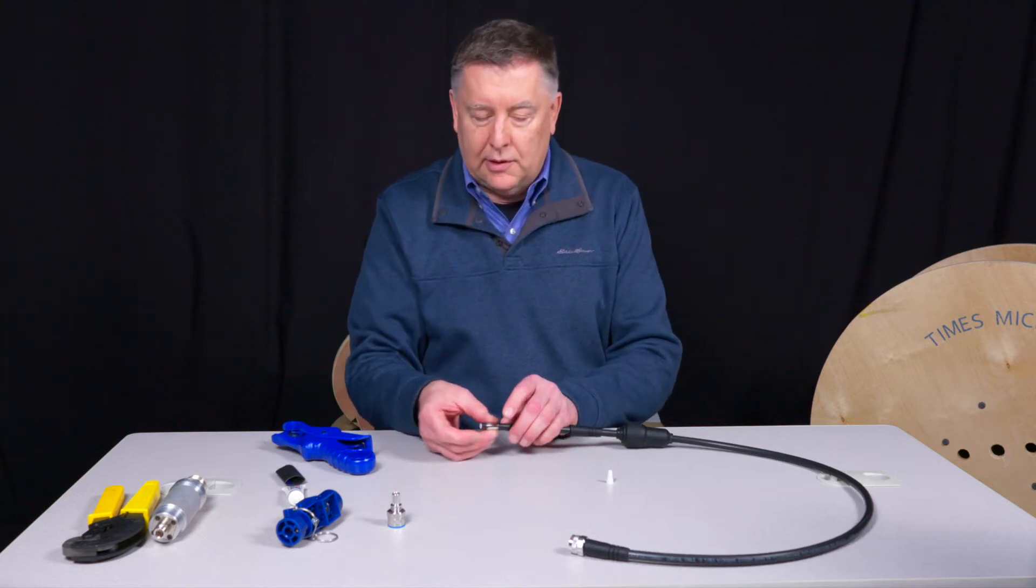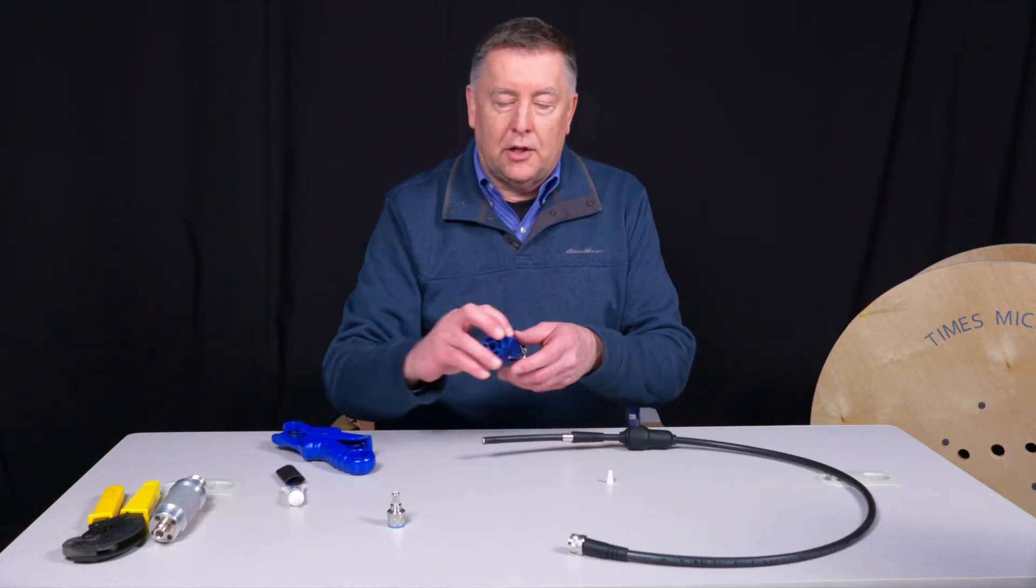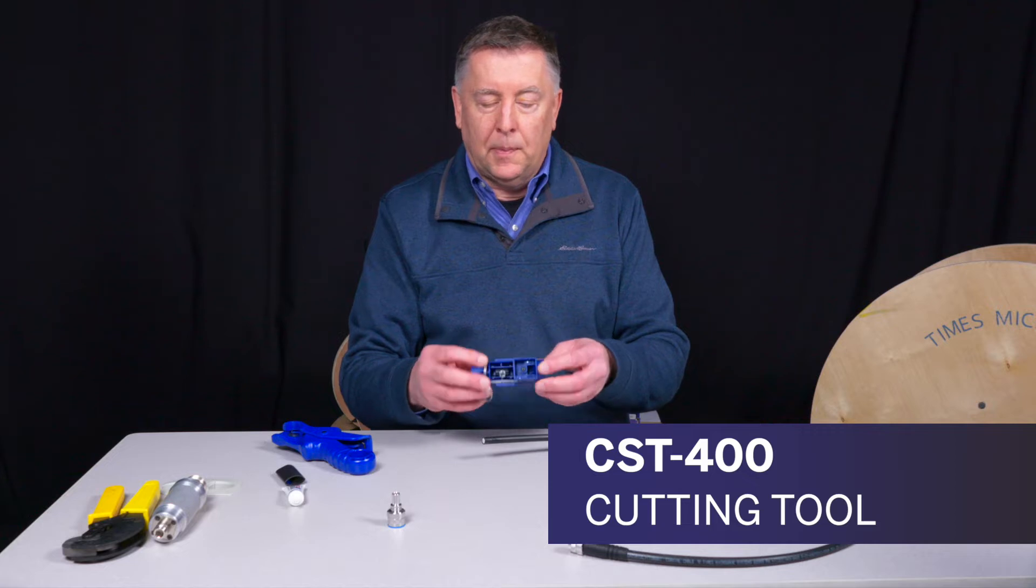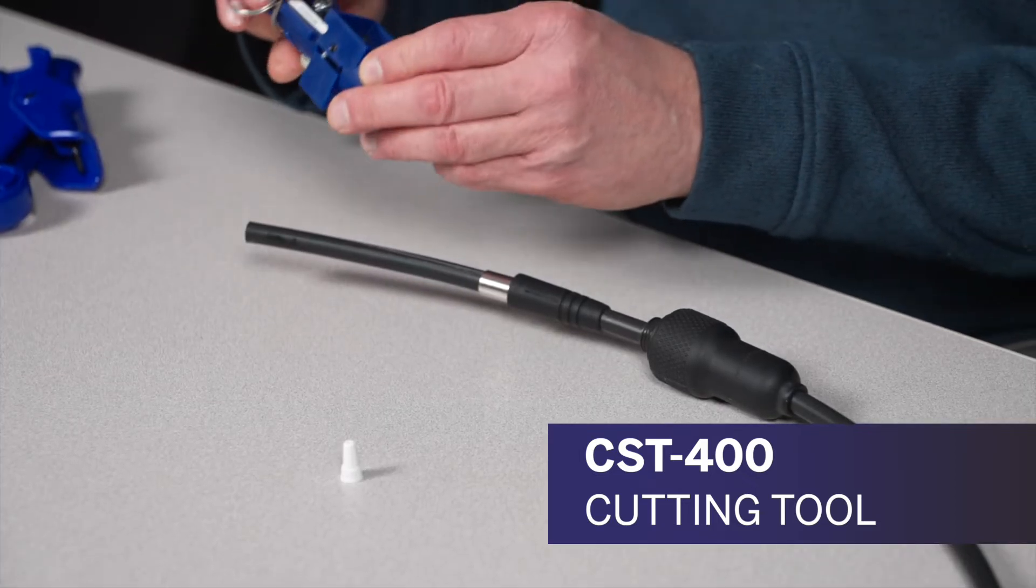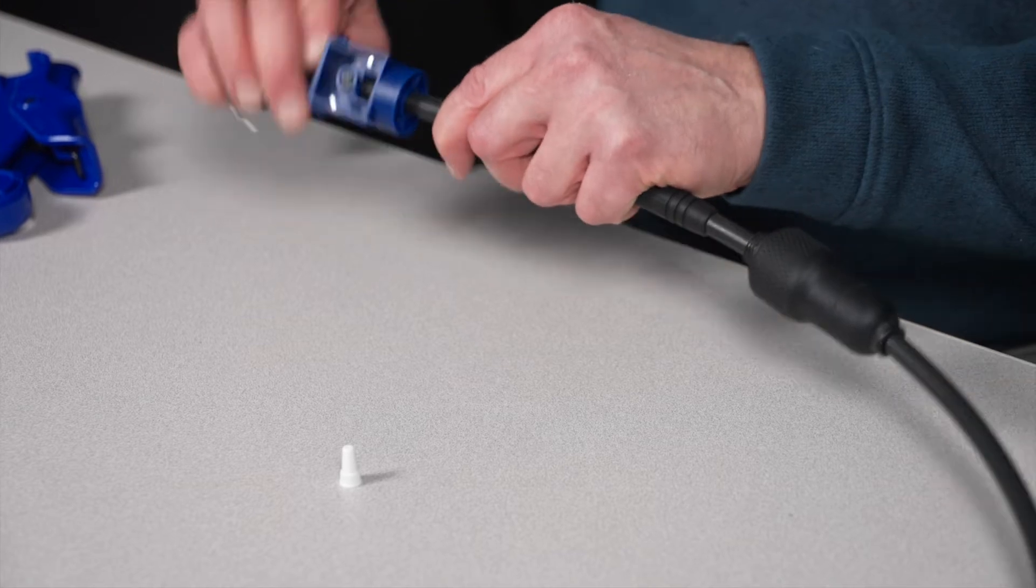You take your crimp ferrule, slide it onto the cable. You take your CST-400 tool, side one. You make sure there's nothing stuck in there. Place it onto the cable, like so.